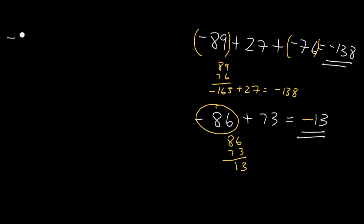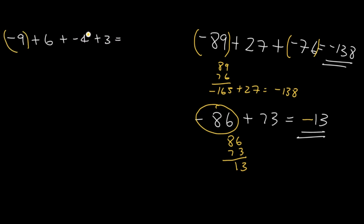Now try solving this problem: negative 9 plus 6 plus negative 4 plus 3. First, group the negatives and add them. Negative 9 plus negative 4 equals negative 13.